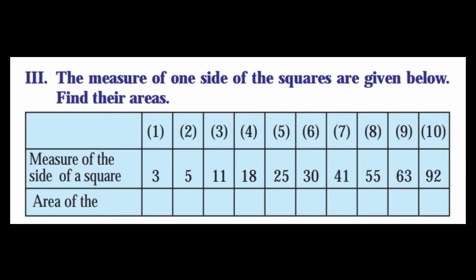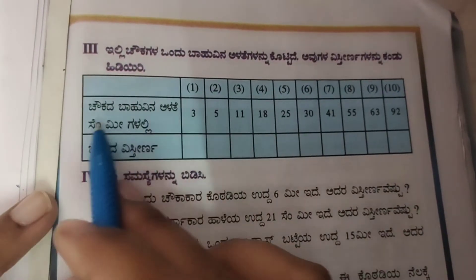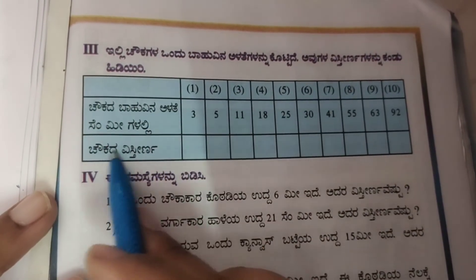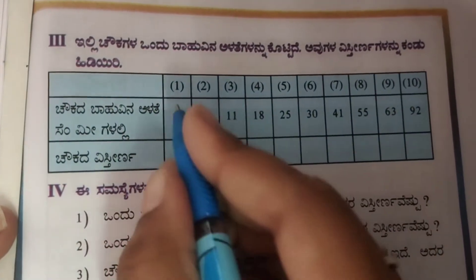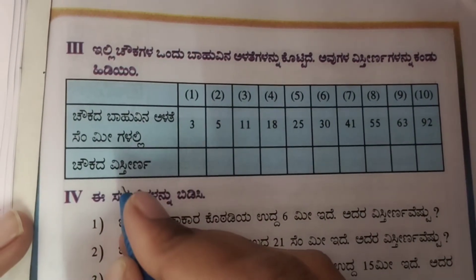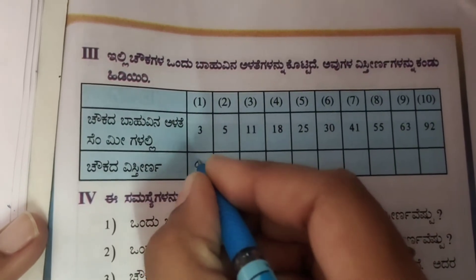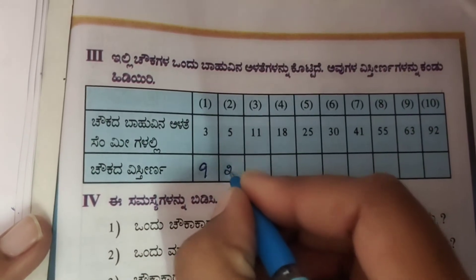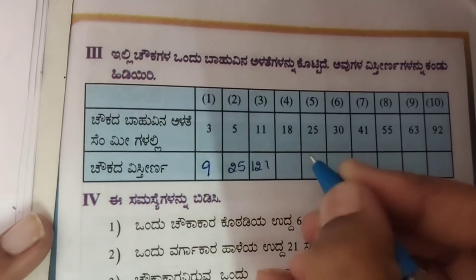Third: the measure of one side of the squares are given below, find their areas. Area equals length into length. For side 3: 3 threes are 9. For side 5: 5 fives are 25. For side 11: 11 into 11 equals 121.